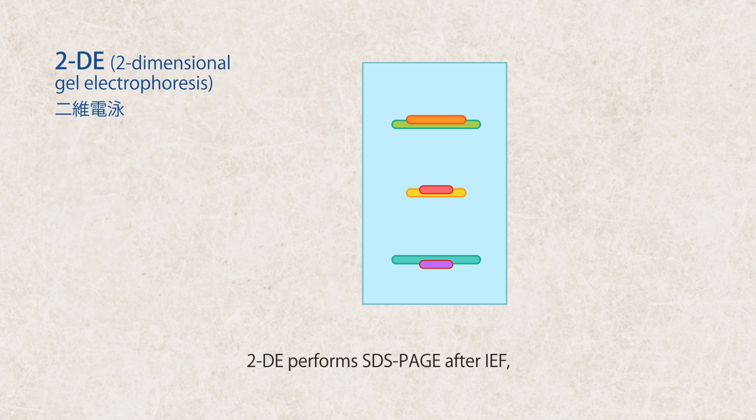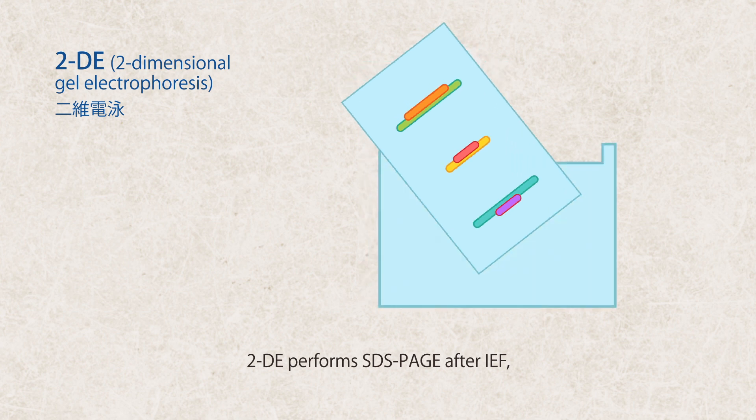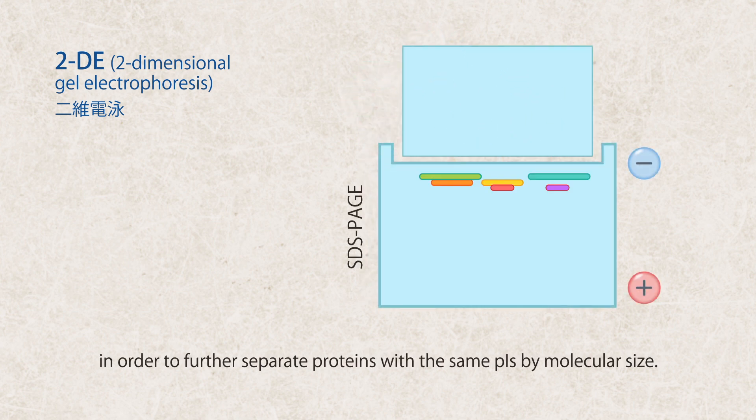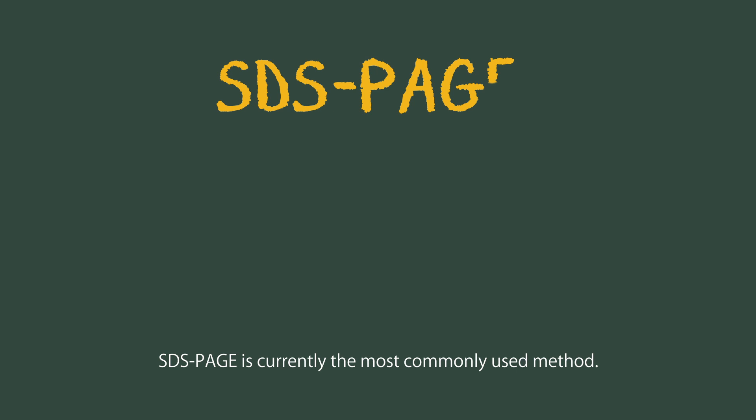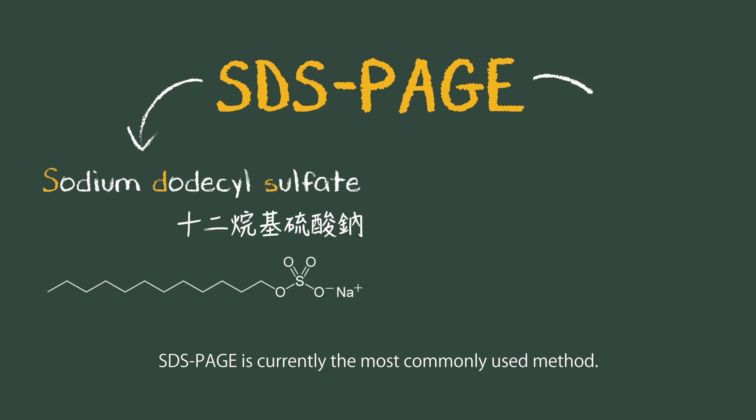2DE performs SDS-PAGE after IEF in order to further separate proteins with the same PIs by molecular size. SDS-PAGE is currently the most commonly used method.